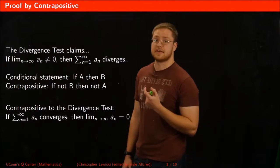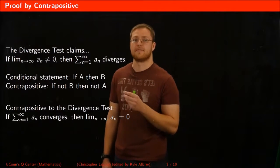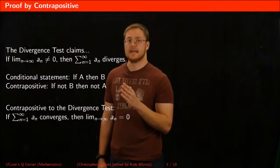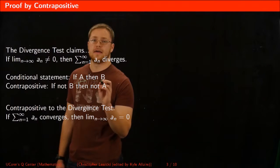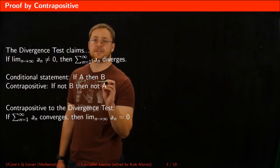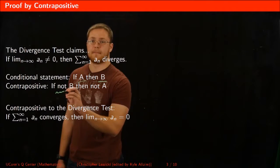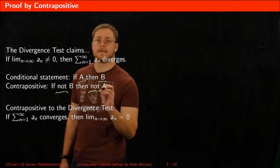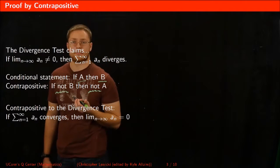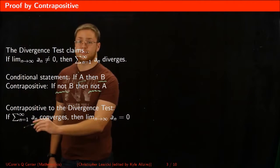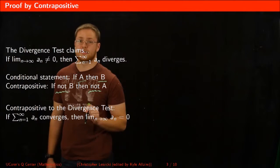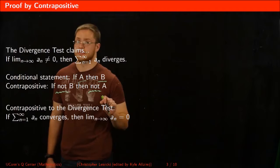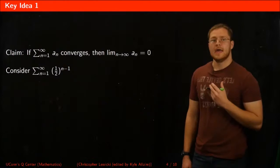The contrapositive to a conditional statement of the form 'if A then B' is a statement where you switch the hypothesis A with the conclusion B and you negate them. So in the case of the divergence test, the contrapositive is: if the series of a_n converges, then the limit as n goes to infinity of a_n has to be equal to zero.